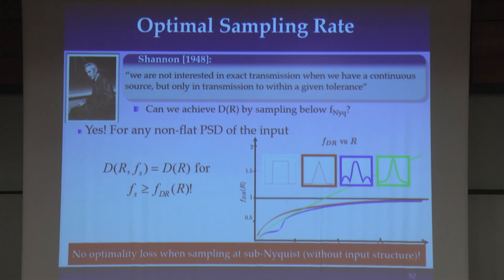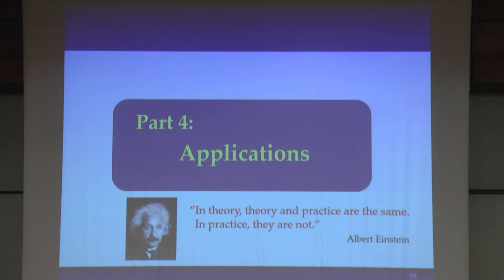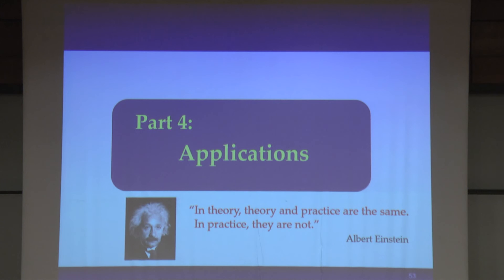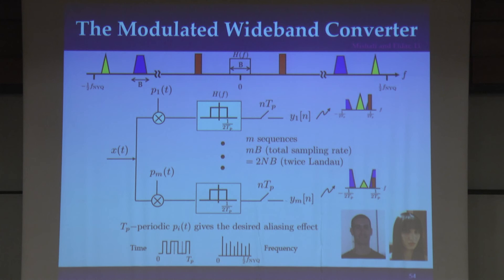This wraps up the theory. In the next few minutes, I want to touch upon the applications briefly — this is a preview of what you're going to see later, and hopefully we'll convince you by the end of the day that despite Albert Einstein's famous quote, the ideas we've shown do translate into practice. Here are some of the examples we're going to see later today: for the cognitive radio problem, we use what we call the modulated wideband converter, which was designed for the cognitive radio problem. It allows you to sample a very wideband signal at very low rates — you could use multiple channels or collapse this down to a single channel.